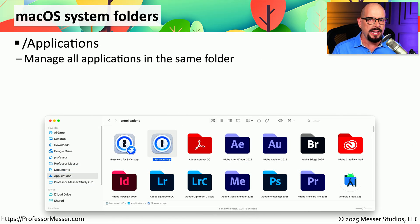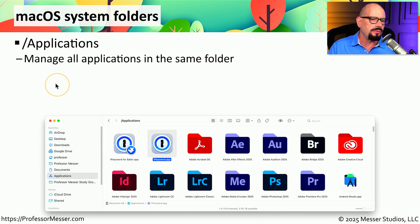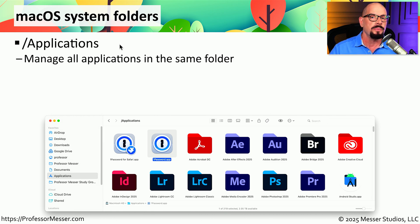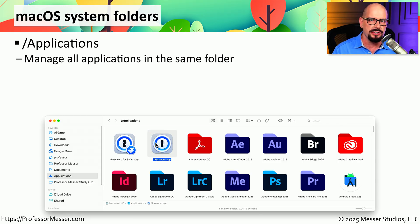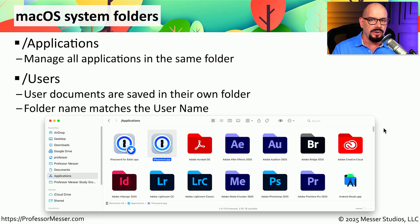Just as Windows has special folders for holding user documents or storing program files, Mac OS also has special folders. One of these is the Applications folder — as the name implies, this contains all of the applications you've installed, very similar to the Program Files folder in Windows. It's one place in your Finder that lists every app you can access in Mac OS. Since these are application bundles, if you want to uninstall an application you simply highlight it in the Applications folder and hit the Delete key, and it is uninstalled from your system.